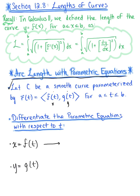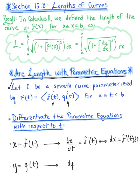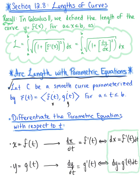We want to take these two parametric equations and differentiate with respect to t. Differentiating both sides with respect to t, the derivative of x with respect to t equals f'(t). Multiplying both sides by dt, this is equivalent to saying the differential dx = f'(t) dt. Similarly for y, differentiating both sides with respect to t, dy/dt = g'(t), so dy = g'(t) dt.